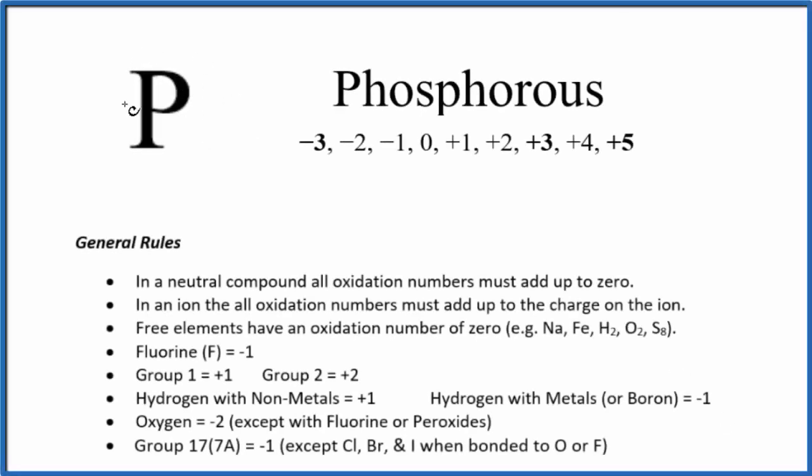To find the oxidation number for phosphorus, we'll use these rules here. Phosphorus can have a number of different oxidation states depending what it's bonded to. Right here it's just P by itself with no negative or positive sign after it, so it's a neutral substance. With neutral substances, the oxidation numbers all add up to zero.